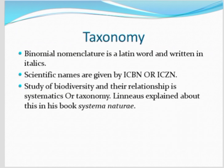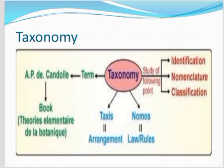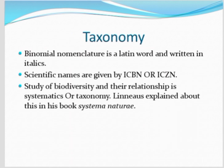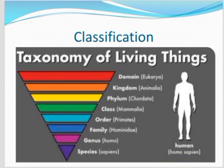Scientific names are written in italics. They are given by ICBN — International Code for Botanical Nomenclature — and ICZN — International Code for Zoological Nomenclature. The study of biodiversity and relationships is called systematics or taxonomy. Linnaeus explained this in his book Systema Natura. Remember: systematics, Systema Natura, and binomial nomenclature is in Latin, written in italics.